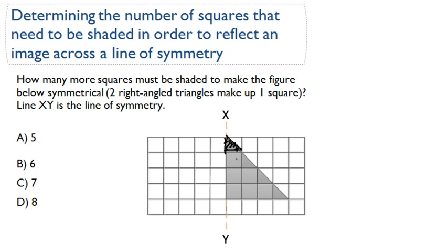So if we count the full squares, we have one, two, three, four, five, six. So we have six full squares, and we're told that two triangles make up one square.